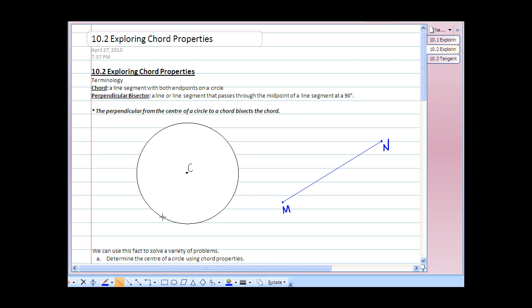So again, if we take our line segment, go from one end to the other, we have a chord. A perpendicular bisector is a line or a line segment that passes through the midpoint of a line segment at a 90 degree angle.